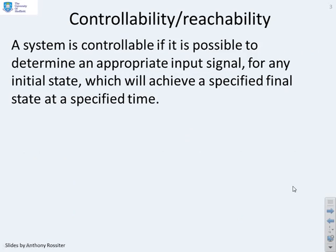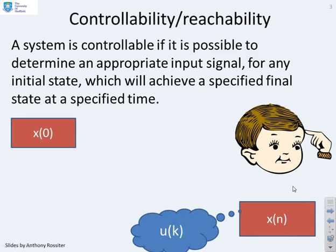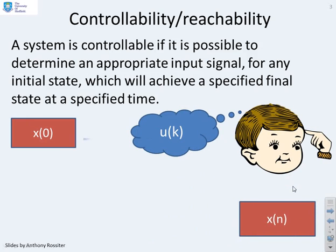A reminder of what controllability means. For an arbitrary initial condition x0 and an arbitrary endpoint xn, the state n samples ahead, you can think of a sequence of input changes u of k which take you from x of 0 to x of n. The key point is that there must always exist a u of k no matter what x of 0 and x of n are chosen to be.